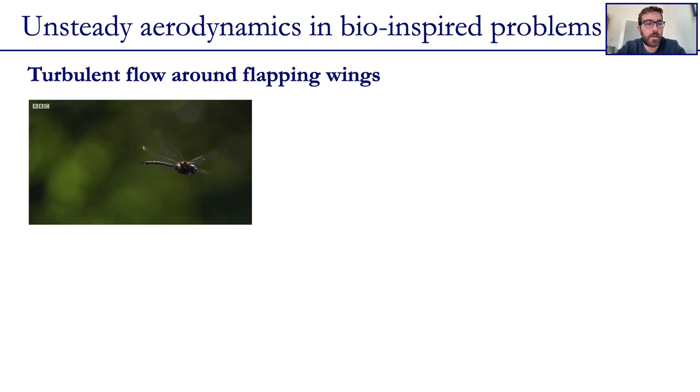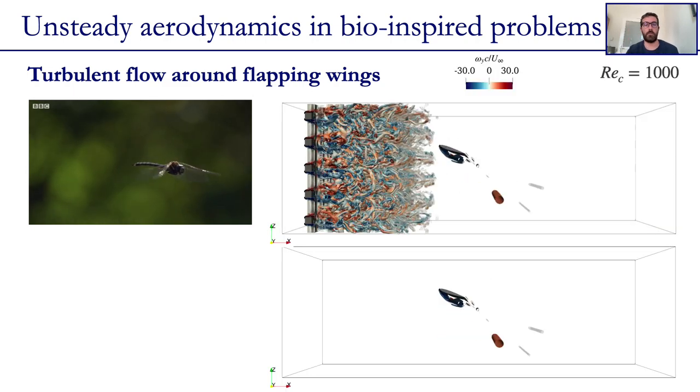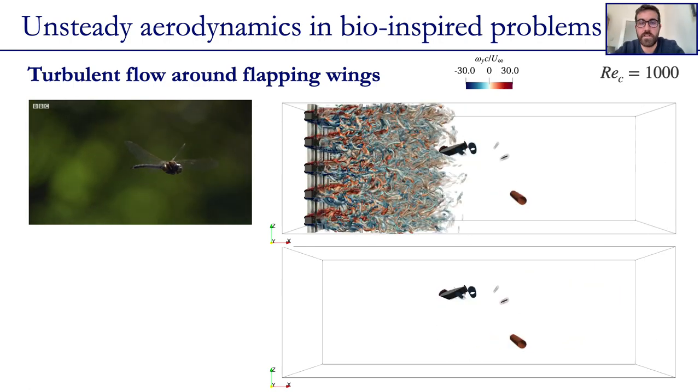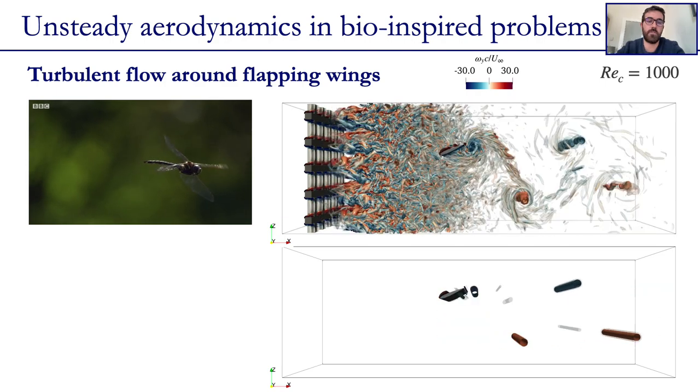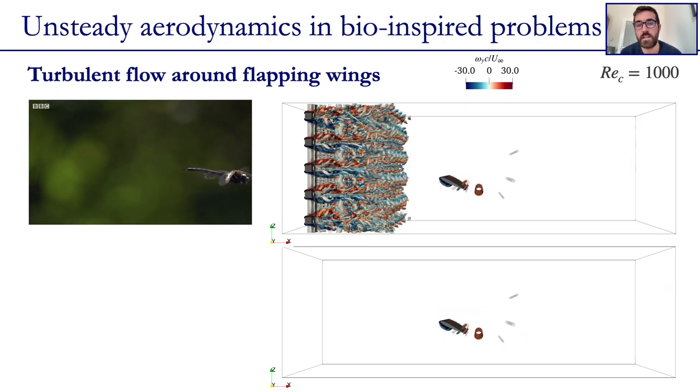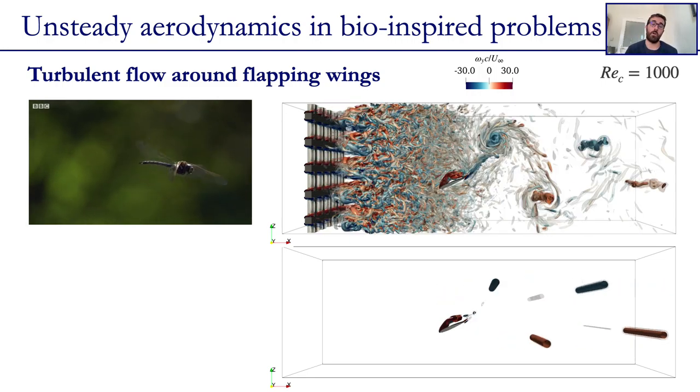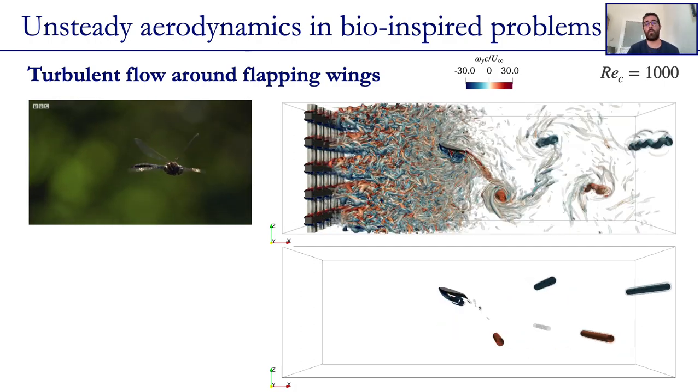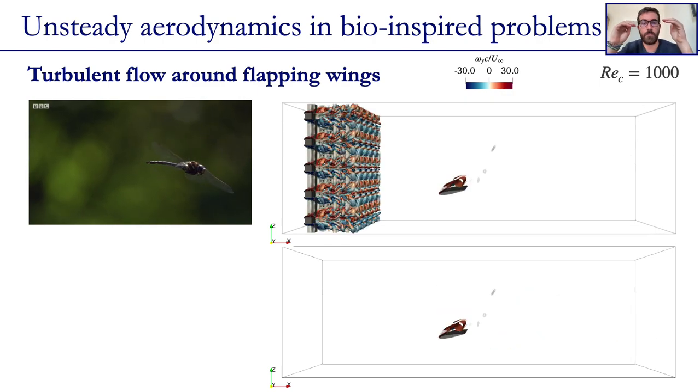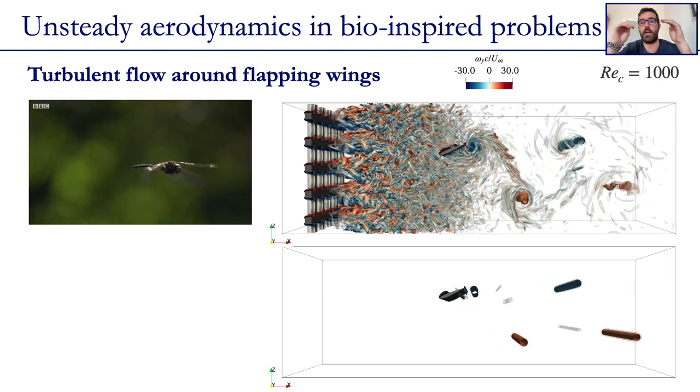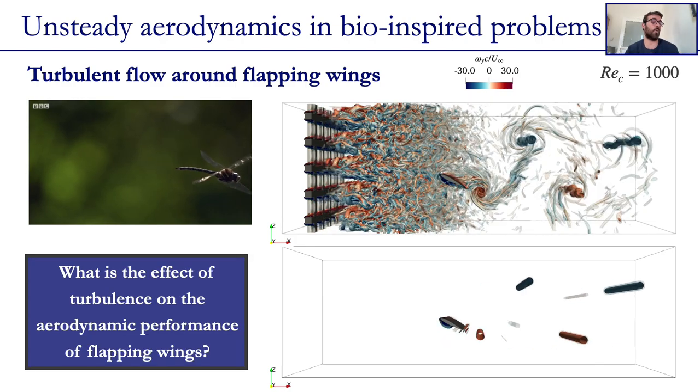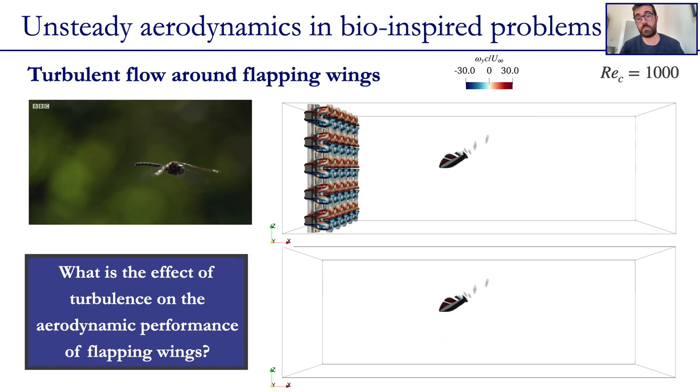Finally, we have been tackling the problem of turbulent flow around flapping wings, and for that we have run several simulations, but in here we show two of them for Reynolds 1000. Basically on top we see a flapping airfoil which has an imposed heaving and pitching motion, and is subject to some turbulence that is being generated by this passive grid that we introduced before. On the lower part, however, we have the very same case, but subject to a laminar flow, and we are able to see qualitatively the differences in the breaking of the vortices that are being shed. Basically, what we would like to assess further is what is the effect of the turbulence on the aerodynamic performance of these wings.